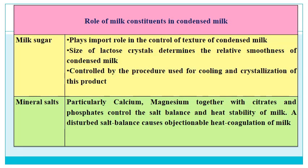Milk sugar plays an important role in the control of texture. The size of lactose crystals determines the relative smoothness of condensed milk — larger crystals can cause sandiness, which is undesirable — and is controlled by the procedure used for cooling and crystallization. Mineral salts, particularly calcium and magnesium together with citrates and phosphates, control the salt balance and heat stability of milk. A disturbed salt balance causes objectionable heat coagulation of milk.